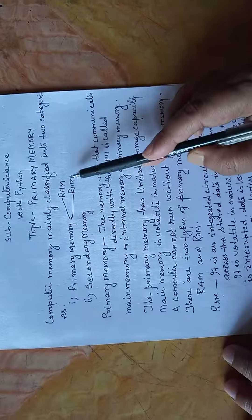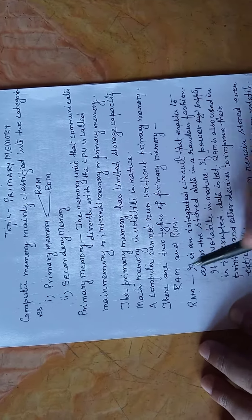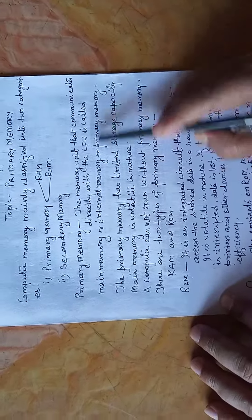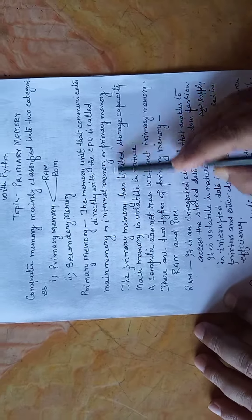Primary memory has two types: RAM and ROM. The memory unit that communicates directly with the CPU is called main memory or primary memory.